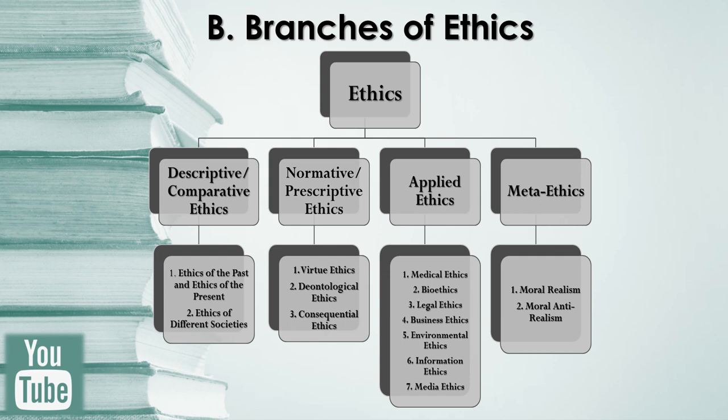The third branch of ethics is applied ethics. This branch deals with the philosophical examination, from a moral standpoint, of particular issues in private and public life which are matters of moral judgment. Under this branch we can study medical ethics, bioethics, legal ethics, business ethics, environmental ethics, information ethics, and media ethics. The last branch is meta ethics. It deals with the origin of the ethical concepts themselves — it questions what goodness, rightness, or morality itself is. It asks: what is goodness? What is evilness? Under this branch one can study moral realism and moral anti-realism.